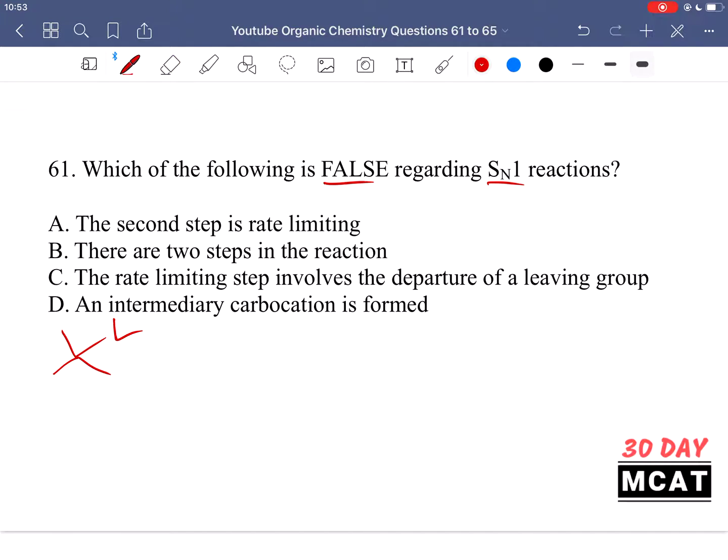In an SN1 reaction the first thing that happens is the leaving group leaves. Then we get this compound called the carbocation. And then our nucleophile can come in and attack. Finally we have the nucleophile attached. The slow rate determining step is this first one in which the carbocation is formed and the second one is fast.